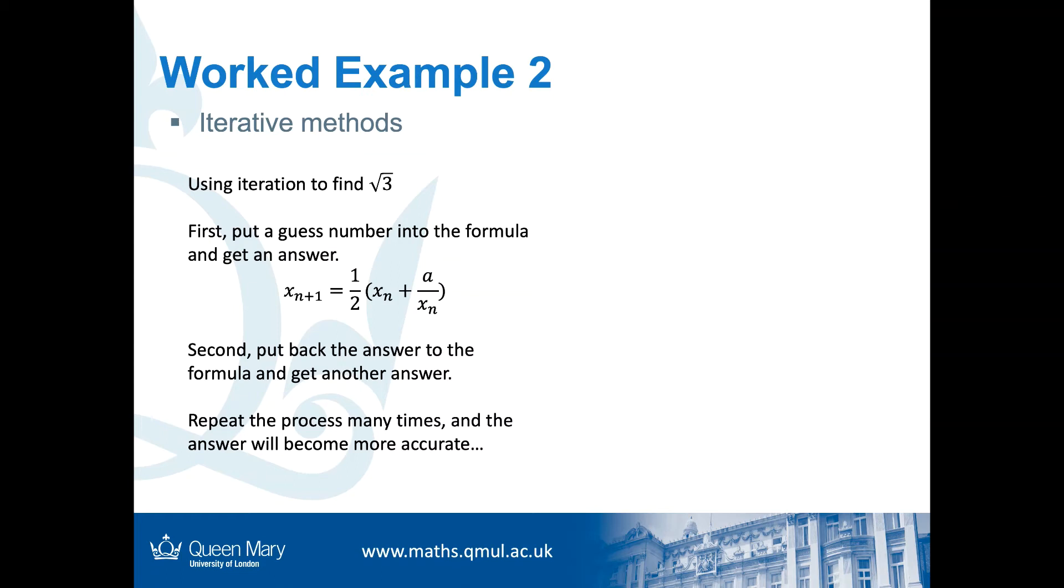Second, we put back the answer to the formula and get another answer. Then, we repeat the process many times and the answer will be more and more accurate. Let's see how we find the square root of 3.